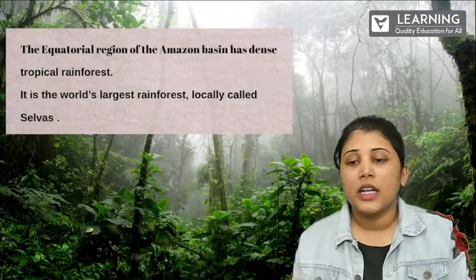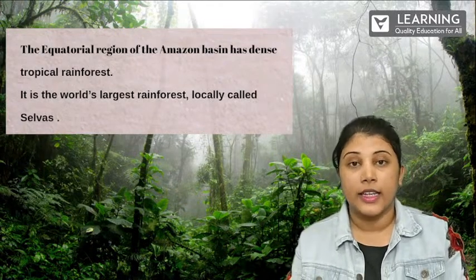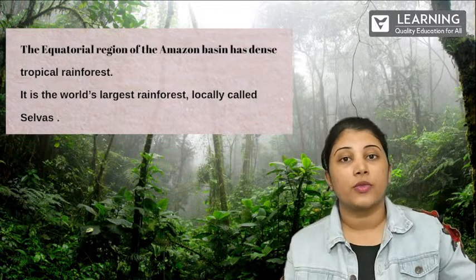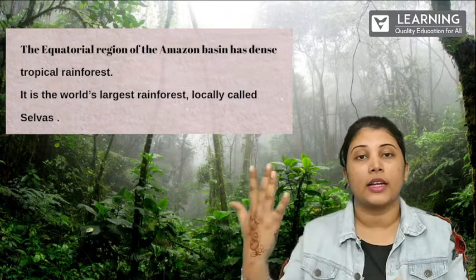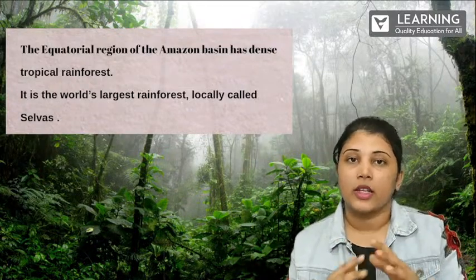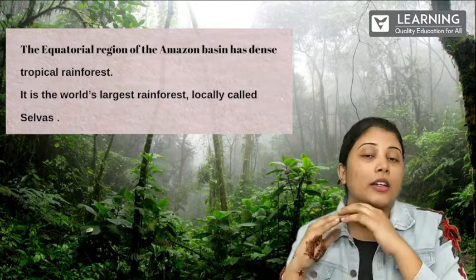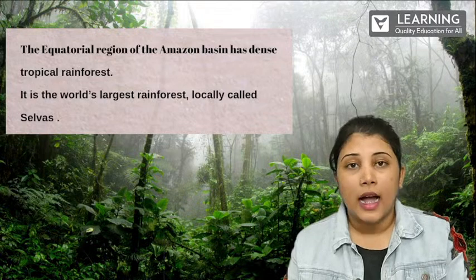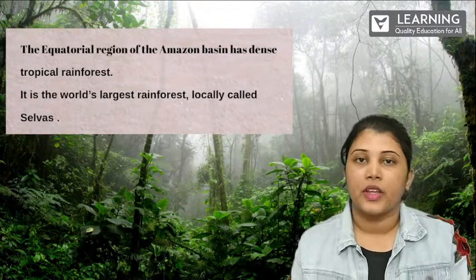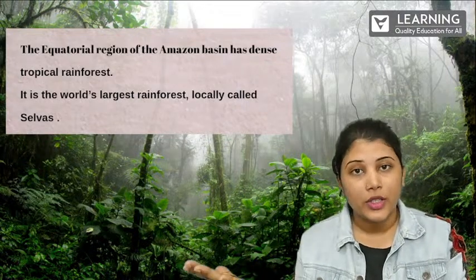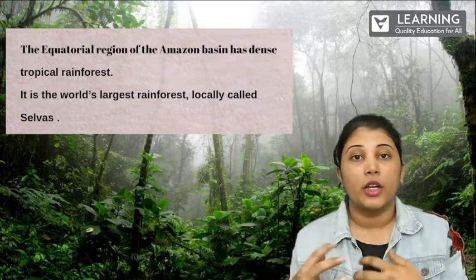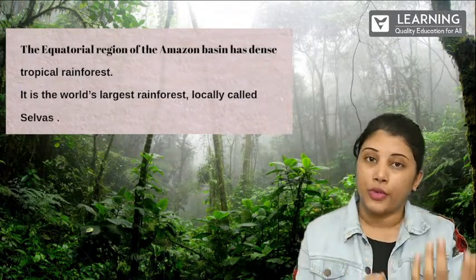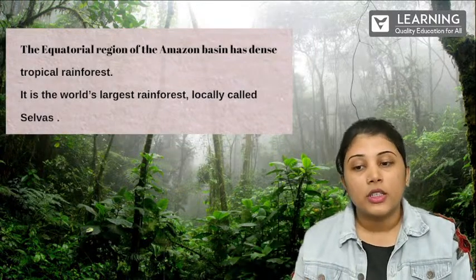The equatorial region of the Amazon basin has dense tropical rainforests. The equator line crosses through South America — the Land of Andes — and on either side are the Tropic of Capricorn and the Tropic of Cancer. The equator brings lots of humidity and because of that humidity, lots of rainfall. It is the world's largest rainforest, locally called Selva. Because of the equatorial region, huge rainfall occurs and huge numbers of trees also grow. This region is called Selva.